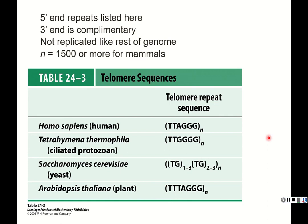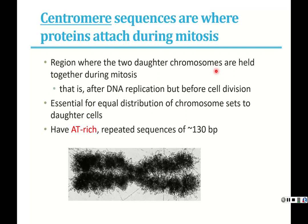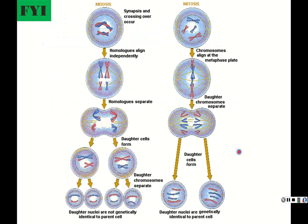Centromeres are the regions where the two sister chromatids come together and where the spindle can attach so that daughter chromosomes are held and split apart during mitosis. They are comprised of AT-rich sequences and repeated sequences of close to 130 base pairs. We don't go too much into the details of the centromere other than that they're AT-rich regions. If you want to remind yourself what meiosis and mitosis are, there's a figure for that, but we won't be getting into those details much in this class.